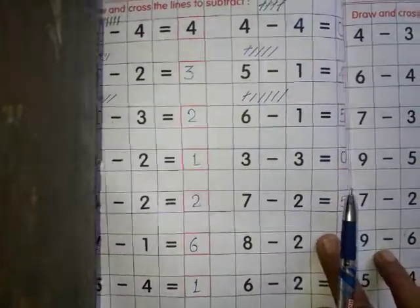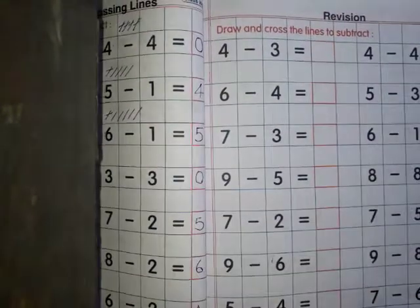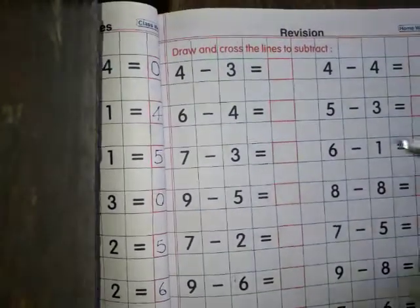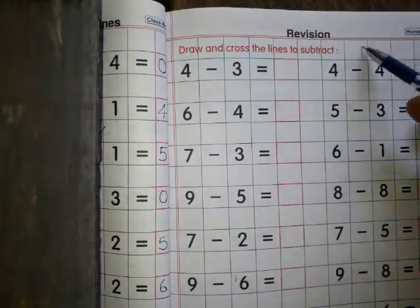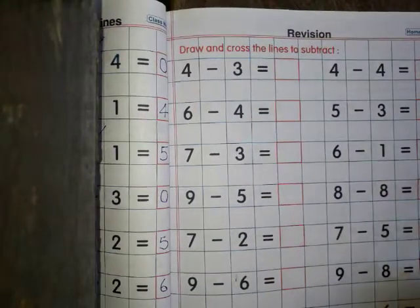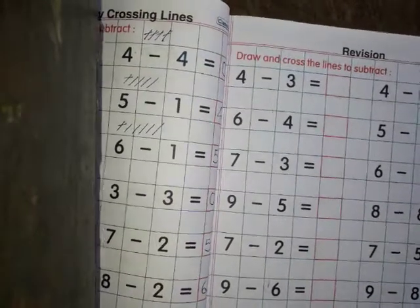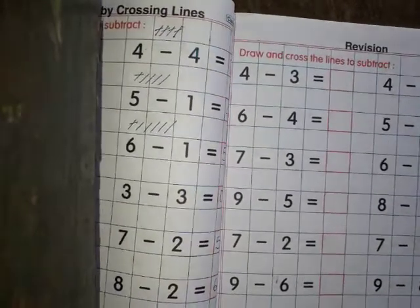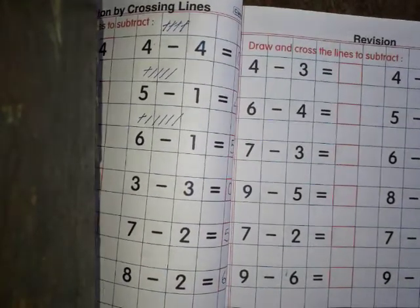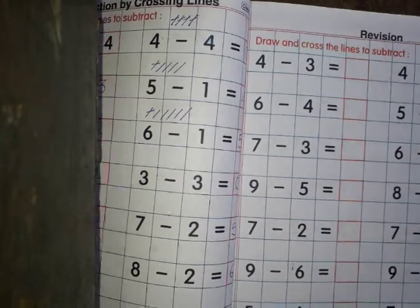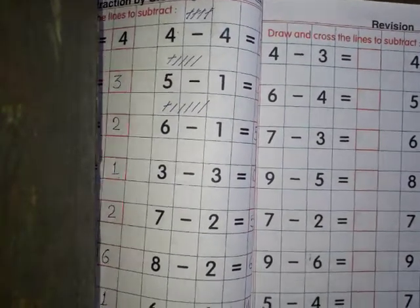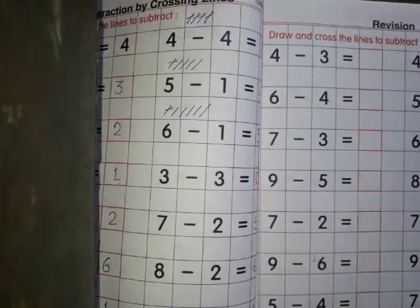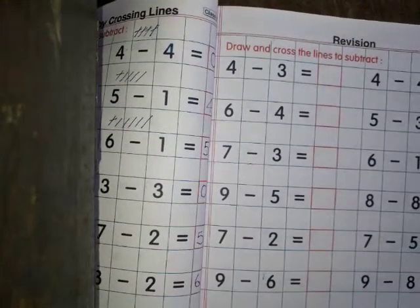यह थी — आपको page number 63, same चीजें हैं, इसको आपको revision करना है homework में। तो आपका page number 61, 62, और 63 homework है, यह आप homework में करेंगे। That's all for today's class. Thank you very much.